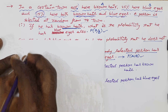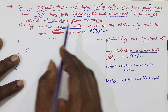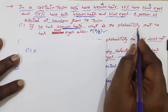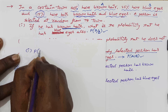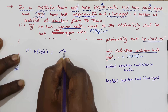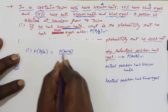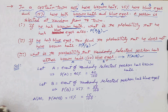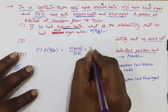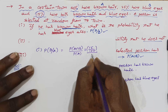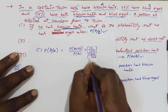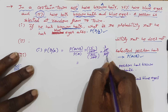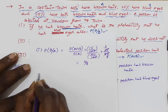For the first question, the person already has brown hair (A is given), and we find P(B|A). By the definition of conditional probability: P(B|A) = P(A∩B) / P(A) = (15/100) / (40/100). The 100s cancel, giving 15/40, which simplifies to 3/8.